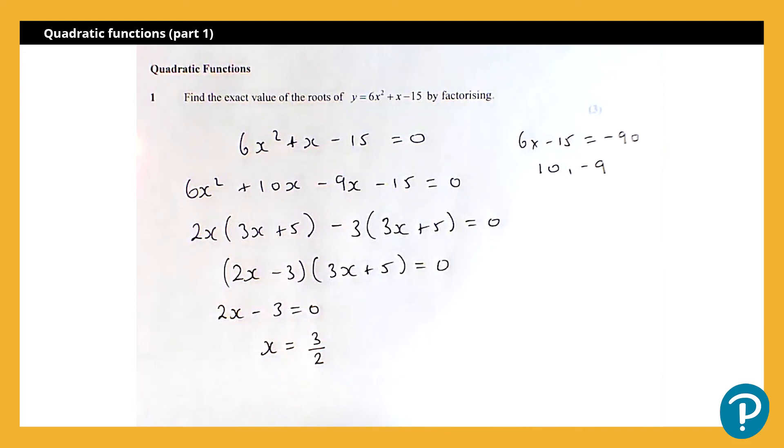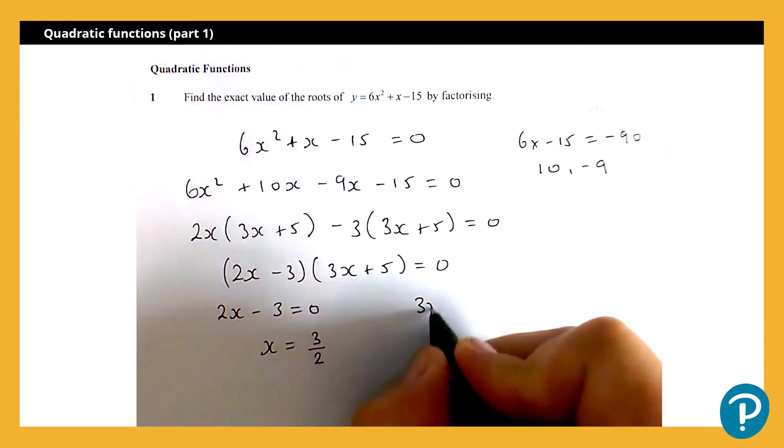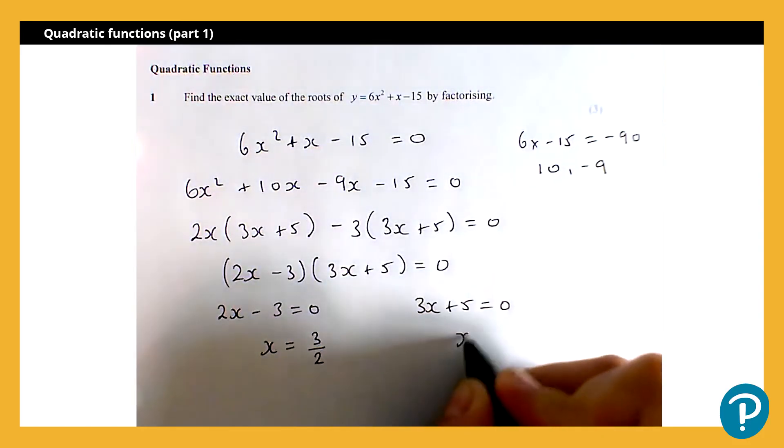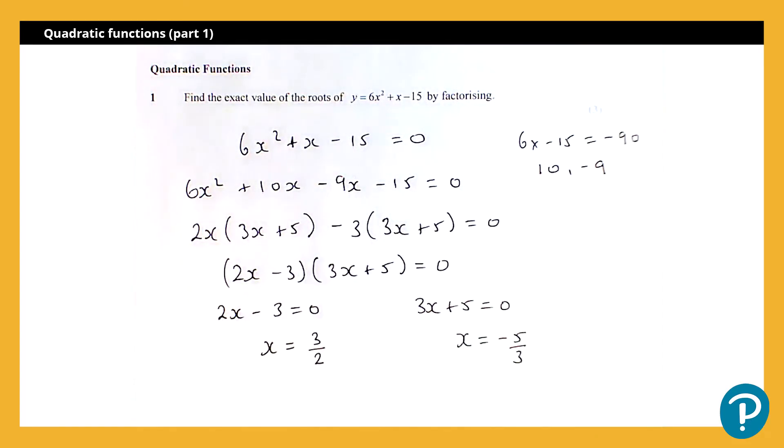You could write that as 1 and a half if you'd prefer. If 3x plus 5 is equal to 0, that would lead me to x is equal to negative 5 over 3, or negative 1 and 2 thirds if you'd prefer.